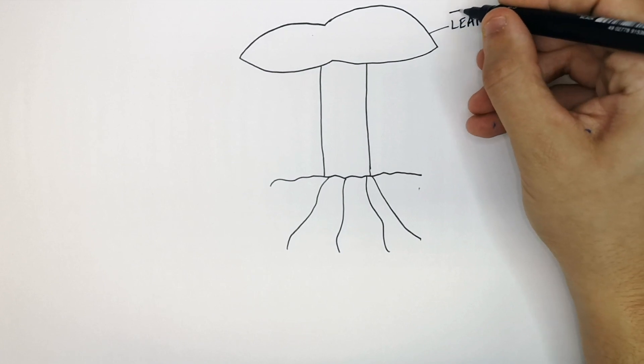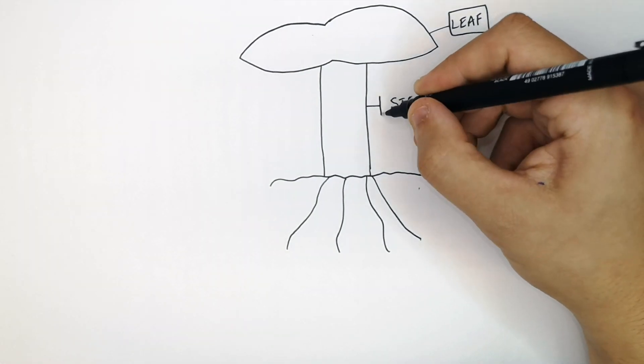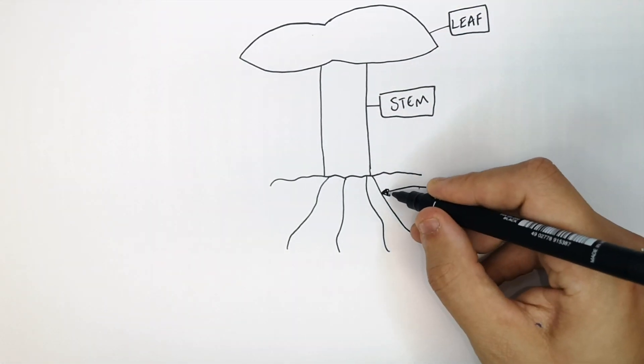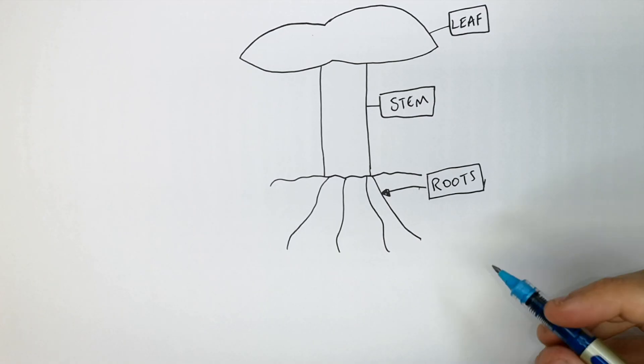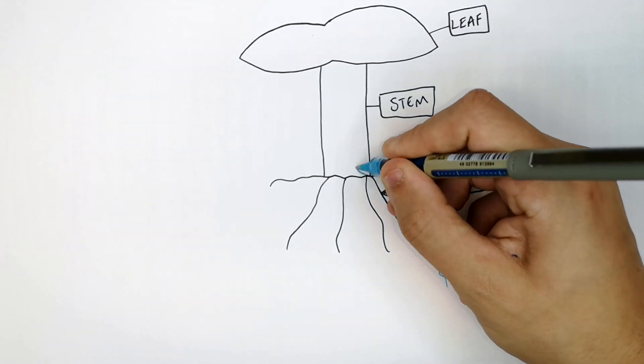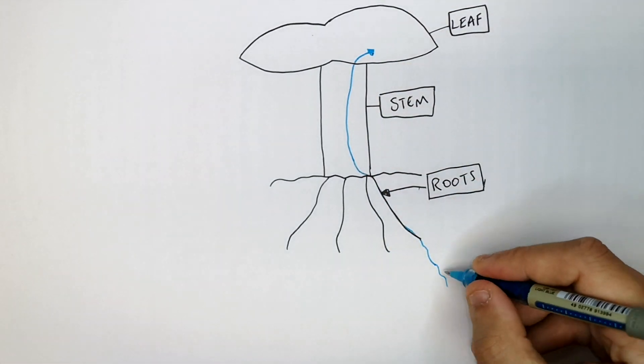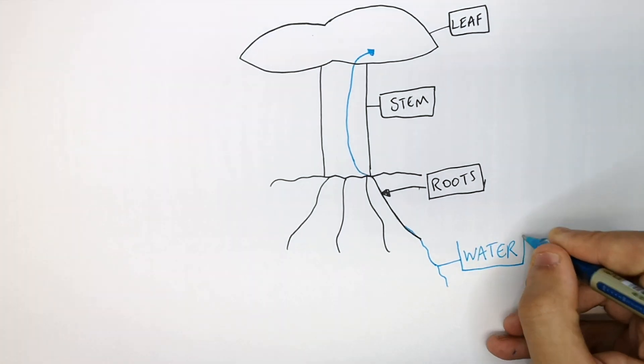The plant consists of the leaf, the stem, and underground you've got the roots. The roots absorb water, and the water goes up the stem to the leaf.